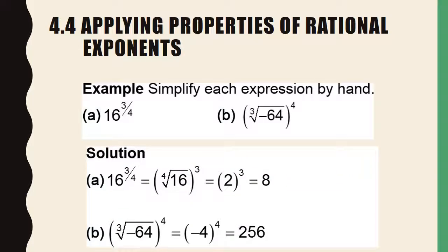For part A, we have the 4th root of 16 to the 3rd power. You can do whichever you prefer first — either the power or the root. In this case, it's easier to do the root because the 4th root of 16 is 2, and then you can raise 2 to the 3rd power and get 8. For part B, take the cube root first and get negative 4, and that to the 4th power is 256. Especially when doing it by hand, it makes more sense to take the root first when you can.